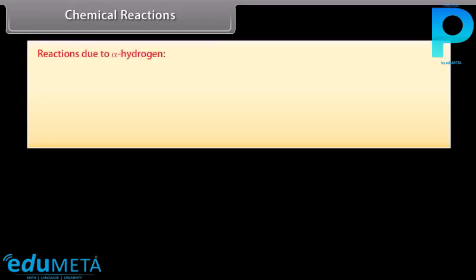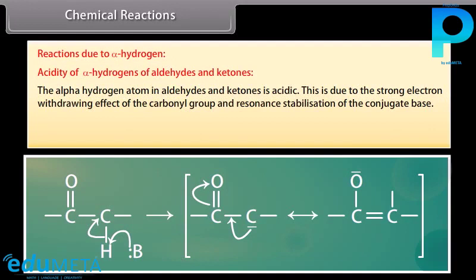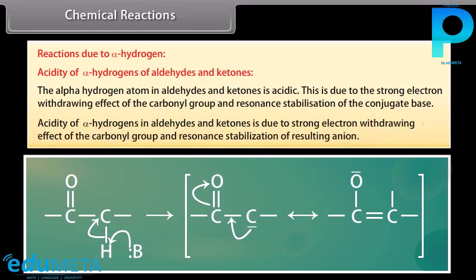Reactions due to alpha hydrogen. Acidity of alpha hydrogens of aldehydes and ketones: the alpha hydrogen atom in aldehydes and ketones is acidic. This is due to the strong electron-withdrawing effect of the carbonyl group and resonance stabilization of the conjugate base, which results in resonance stabilization of the resulting anion.